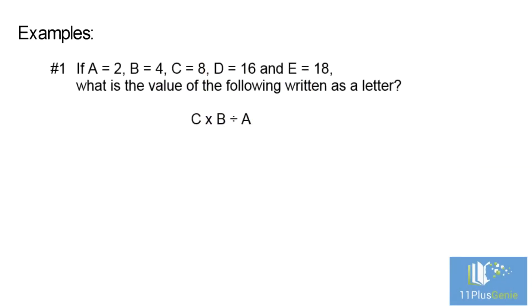Example number one: If A equals 2, B equals 4, C equals 8, D equals 16, and E equals 18, what is the value of the following written as a letter? C times B divided by A.